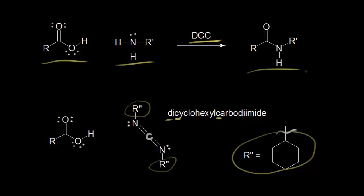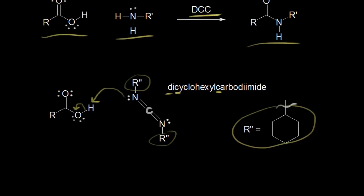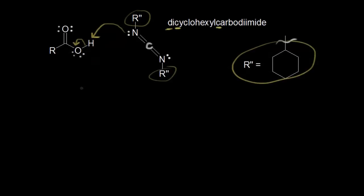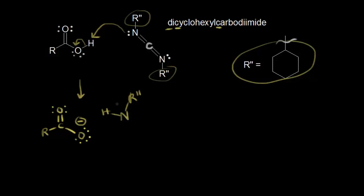Let's look at the mechanism. The first step is for DCC to function as a base. The lone pair of electrons on the nitrogen takes the proton, leaving these electrons behind on the oxygen. Taking a proton away from your carboxylic acid gives you your carboxylate anion — three lone pairs of electrons on the oxygen, giving it a negative one formal charge. This nitrogen picks up that proton and now has a plus one formal charge.